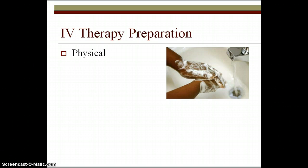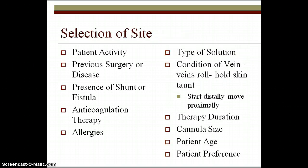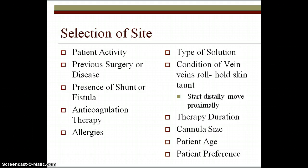When looking at site selection, consider what type of solution is running in, how active the patient is, whether they've had or are going to have surgery, and any allergies. For anticoagulant therapy, consider how much they may bleed. Note the presence of a shunt, graft, or fistula. Never start an IV on a site where they've had a mastectomy, due to lymphedema, or on a site with a dialysis graft, as it will damage the graft. Never start the IV near a valve or where the vein bifurcates, as it could cause blood to pool to the distal extremity.